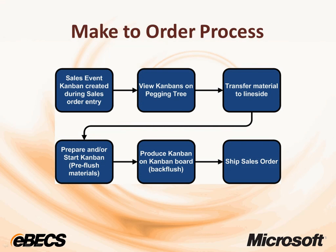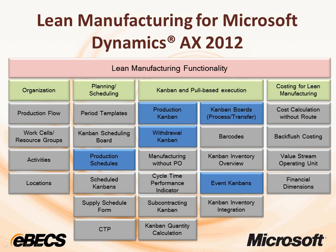We've just covered the lean make-to-order process in Microsoft Dynamics AX 2012. We started out with a sales order which generated a sales event that created a pull to the final assembly cell. We viewed the Kanbans on the pegging tree, which showed us all the specific Kanbans required for this sales order and their status. We transferred material using withdrawal Kanbans to the line side warehouse, started the Kanban which consumed the required materials, then completed it — putting it in inventory and making it available to ship. This concludes the make-to-order process using sales event Kanbans within lean manufacturing for Microsoft Dynamics AX 2012. Be sure to check out some of the other demonstrations we have as well, covering much more than that.